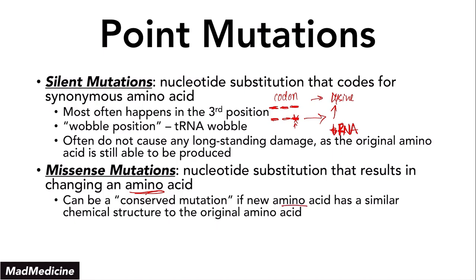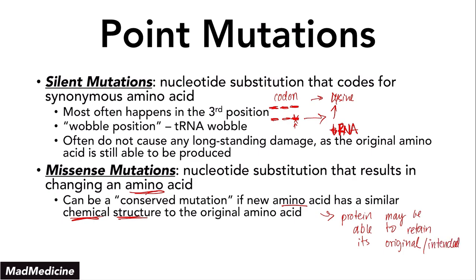In a conserved mutation, the new amino acid must be similar to the original amino acid. If it is chemically similar to the original amino acid, the protein may be able to retain its original intended function — the key word is 'may,' no guarantees. In a missense mutation, you may go from, for example, CAA to CGA. This second position change will code for a completely different amino acid, and therefore the protein might be changed.